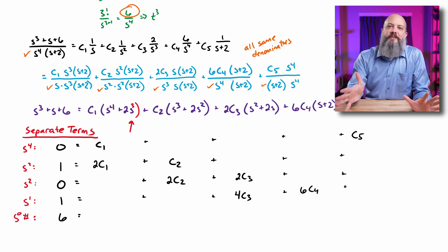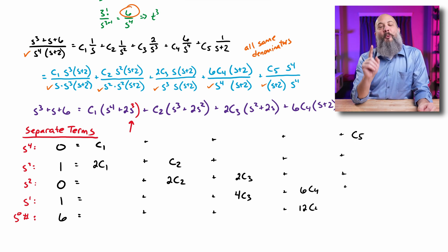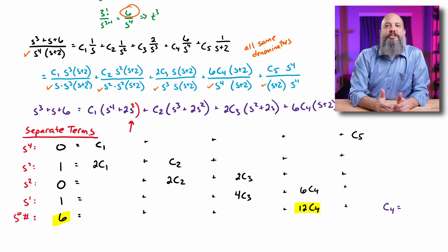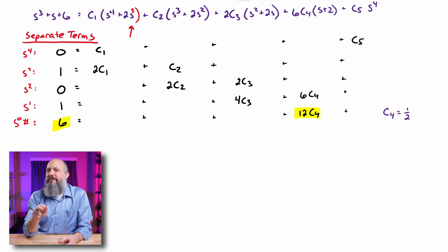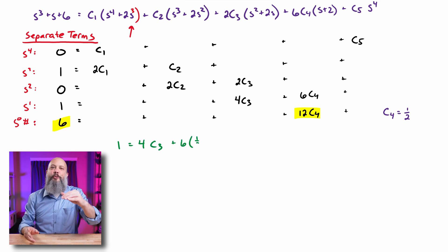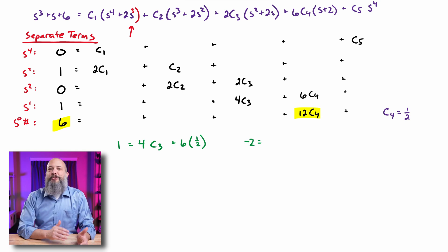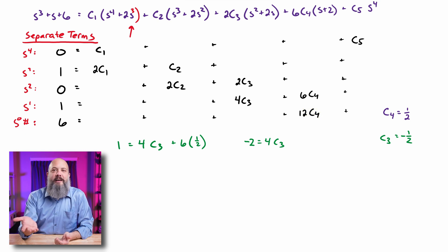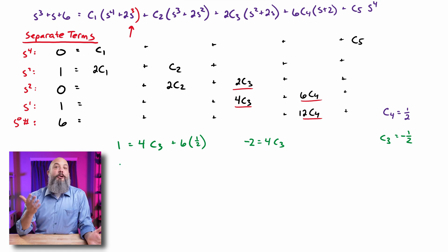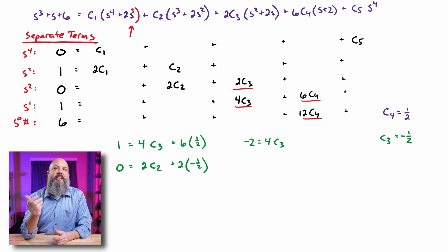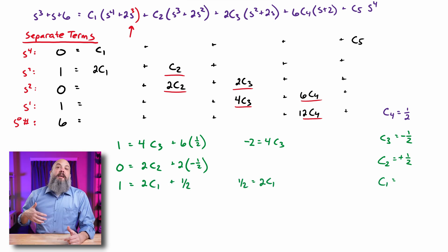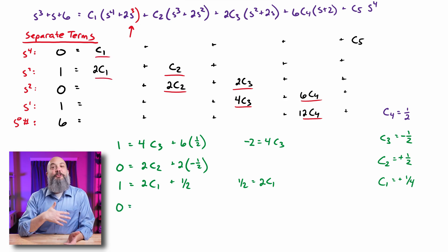This looked like a big five-by-five matrix, but fortunately the last equation has only one unknown. Dividing by 12 gives c4 = 1/2 right away. Then plugging into the s¹ equation: 1 = 4c3 + 6·(1/2), giving c3 = −1/2. Plugging into the s² equation: 0 = 2c2 + 2·(−1/2), giving c2 = 1/2. Then c1 = 1/4, and finally c5 = −1/4.